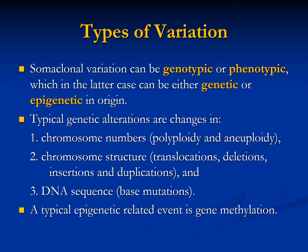Somaclonal variations can be genotypic or phenotypic, which in the latter case can be either genetic or epigenetic in origin. Typical genetic alterations are changes in chromosome numbers, which include polyploidy and aneuploidy; chromosome structure caused by translocations, deletions, insertions, and duplications; and DNA sequence changes resulting from base mutations. A typical epigenetics-related event would be gene methylation.